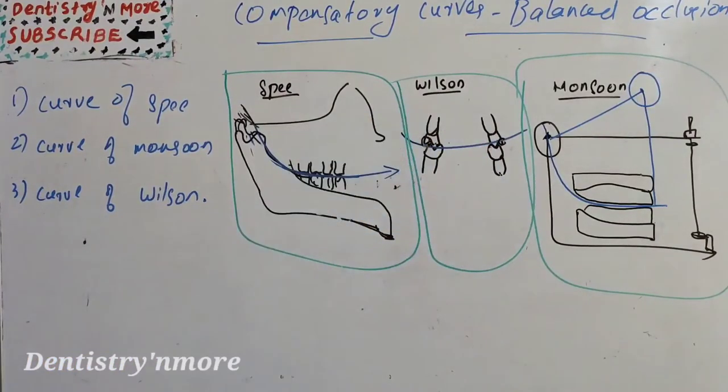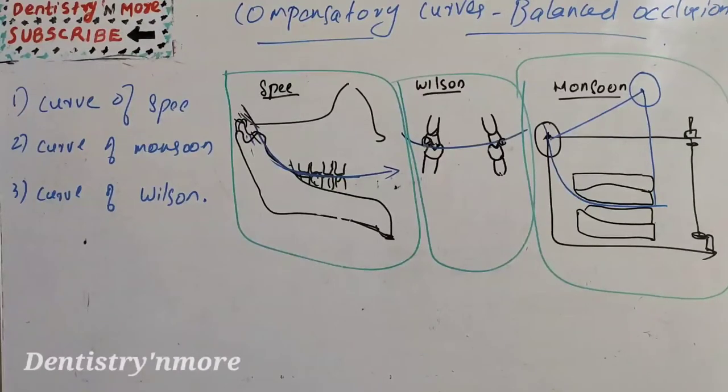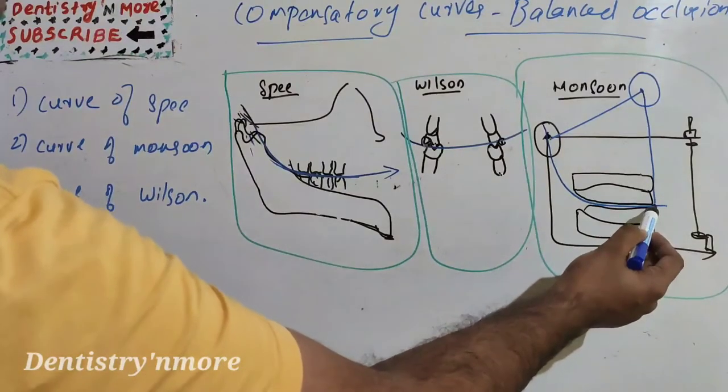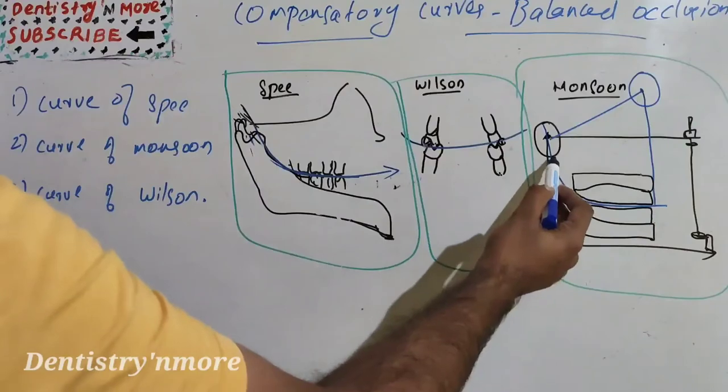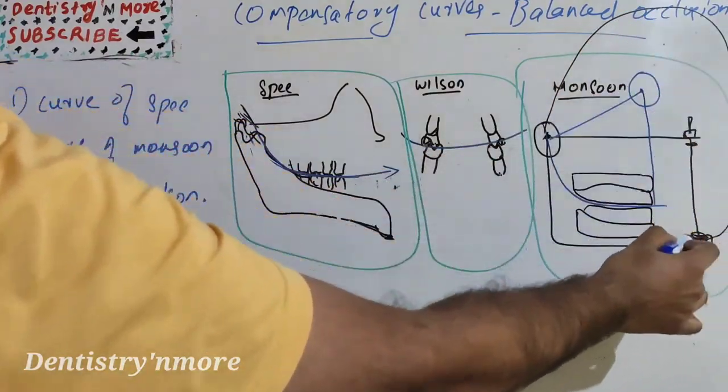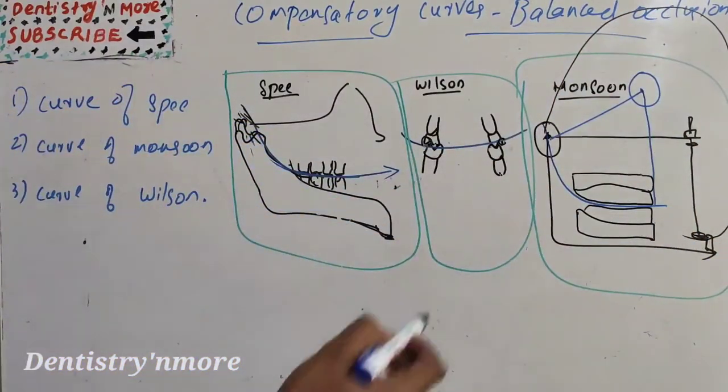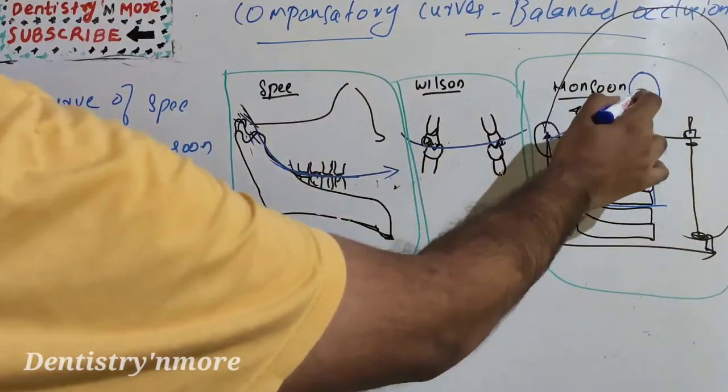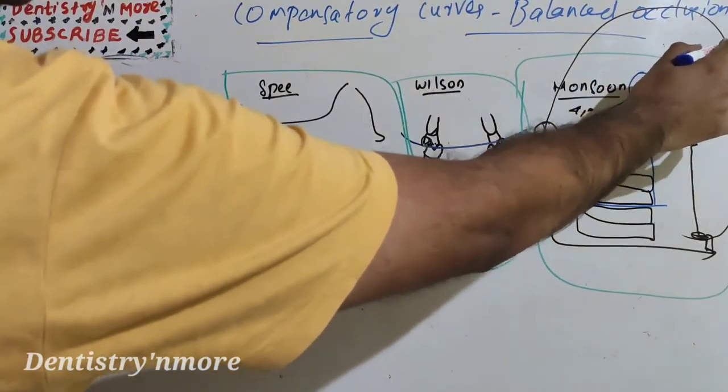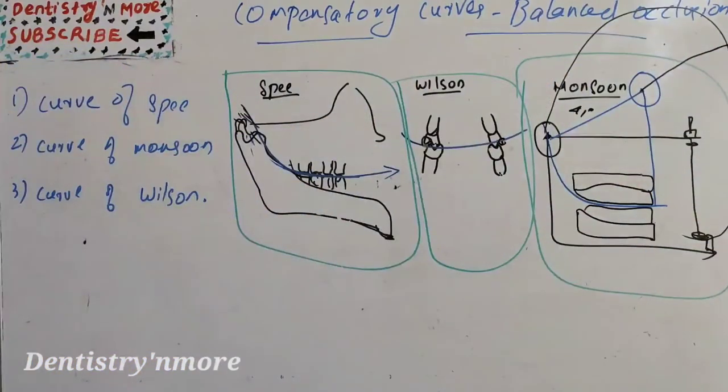And the last one is curve of Monsoon. The curve of occlusion in which each cusp and incisal edge touches a segment of a surface of an 8-inch sphere. So if we extend this, it will become an 8-inch sphere. This will be a 4-inch radius and this will be the diameter, so it will become a circle of 8 inches.